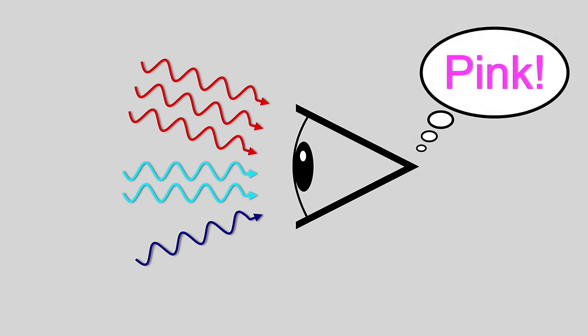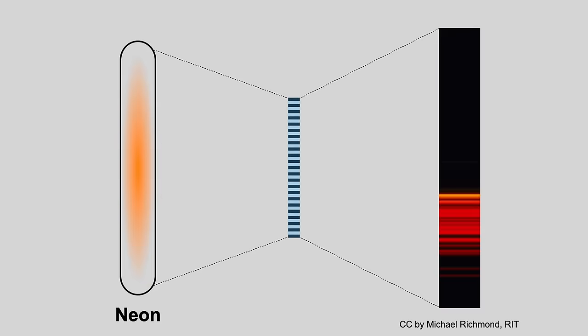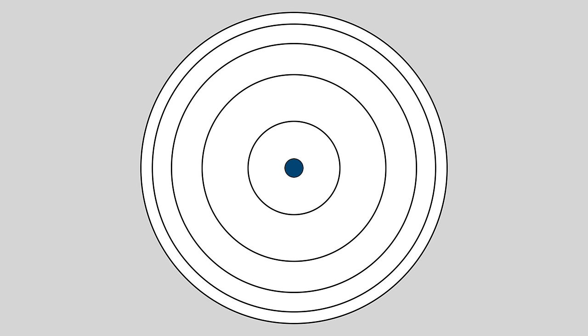Every atomic element has a unique emission spectrum. For example, neon looks orange, helium yellow, and mercury produces a light blue color. For the rest of this video, we'll skip showing all these rings and just draw the atom with the color that it's about to emit.